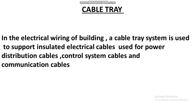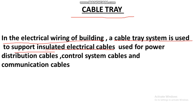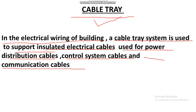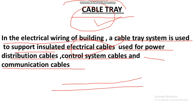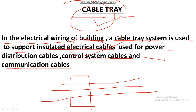So basically, what is a cable tray? In the electrical wiring of a building or industry, a cable tray system is used to support insulated electrical cables used for power distribution, control system cables, and communication cables. So cable trays are used to support power cables, control cables, and communication cables. Cables are laid through the cable tray to distribute power, and those cables should be insulated type.